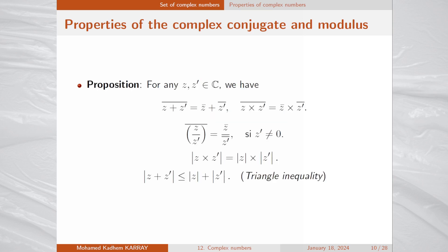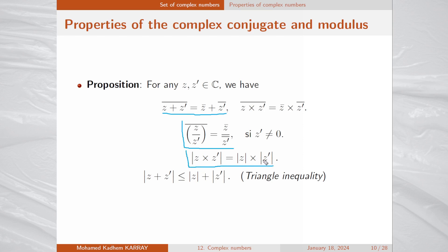Here are the basic properties of complex conjugate and modulus. The conjugate of the sum of z and z prime equals the conjugate of z plus the conjugate of z prime. Similarly, the conjugate of the product is the product of the conjugates. The conjugate of the ratio equals the ratio of the conjugates. The modulus of a product equals the product of the moduli. Finally, the triangle inequality states that the modulus of the sum of two complex numbers is less than or equal to the sum of their moduli.